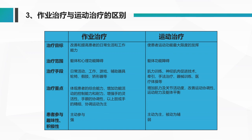在治疗手段上也不一样。对于作业治疗，在日常生活和活动中要采用一些辅助器具，像轮椅、矫形器、脚型器等，进行辅助治疗。而运动治疗的治疗手段主要是通过肌力训练、神经肌肉的促进技术，以及牵引和器械训练、医疗体操等来完成。